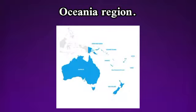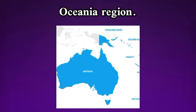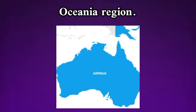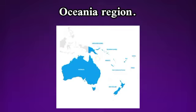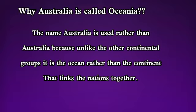Oceania region has the most major landmass in Australia. This is why Australia is called Oceania. The name Oceania is used rather than Australia because, unlike the other continental groups, it is the ocean rather than the continent that links the nations together.